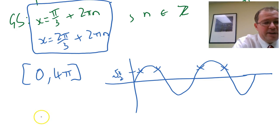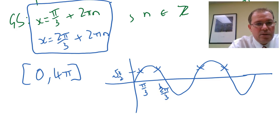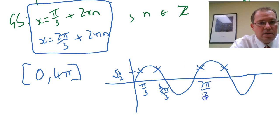So we'll put n values in. If I put n equals 0 into both equations it gives me π over 3 and 2π over 3—so there's the first two solutions. Putting n equals 1 into both equations gives me 7π over 3 into this one, and n equals 1 into that one gives me 8π over 3.